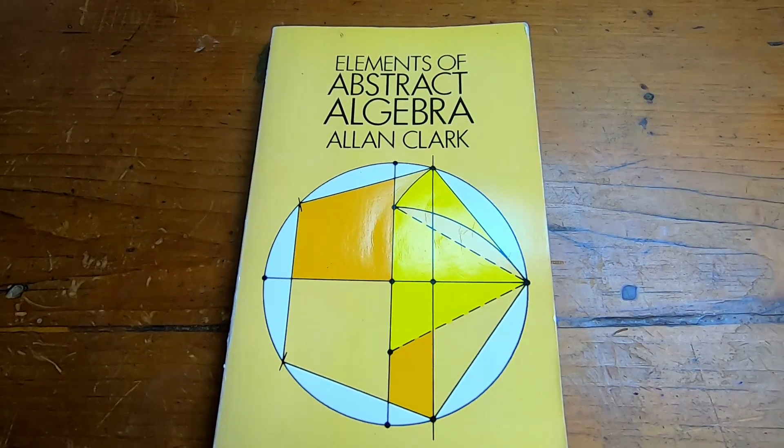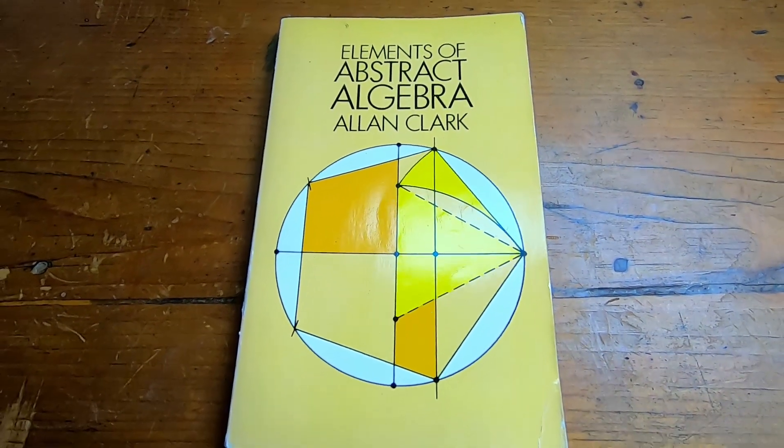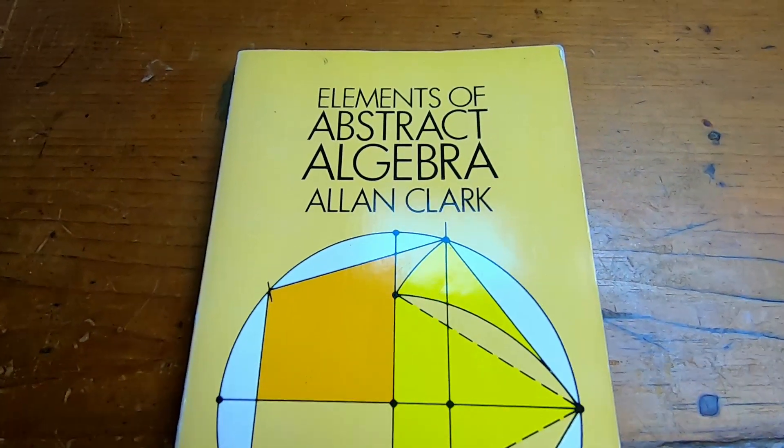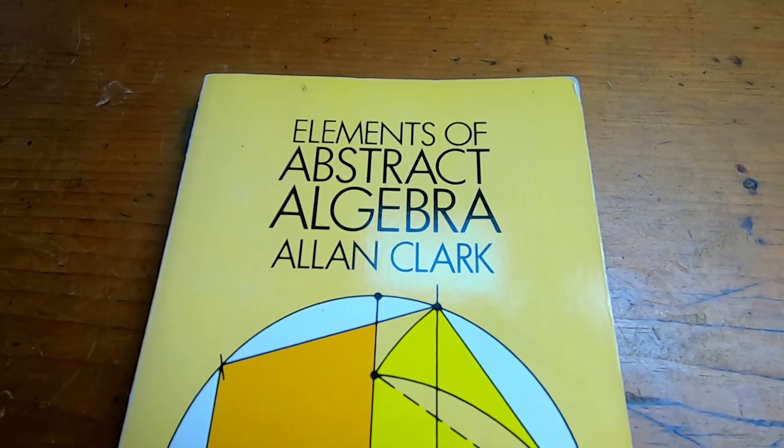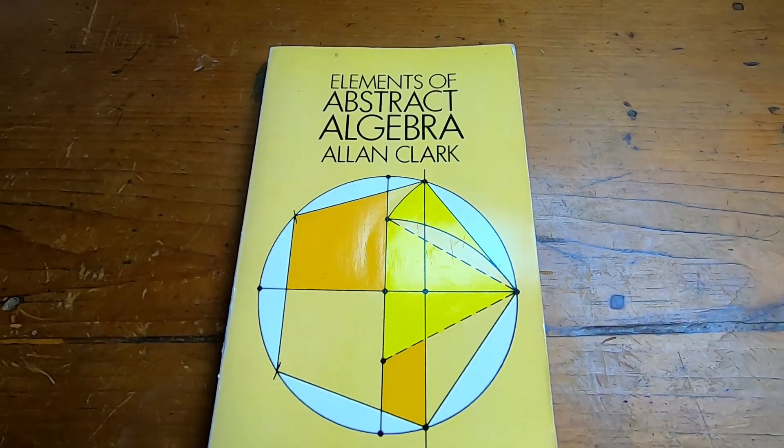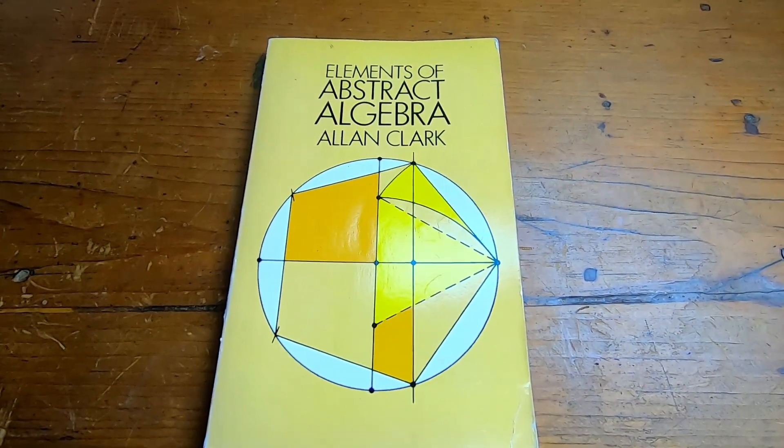This book is called Elements of Abstract Algebra and it's written by Allan Clark. So I bought this book because I had a friend on the internet who used to hang out on IRC, Internet Relay Chat. This guy was like a math rock star and he said that this was a good book. So I bought the book and I read it and I have some mixed thoughts. Let's take a look inside this book because it's really quite interesting.